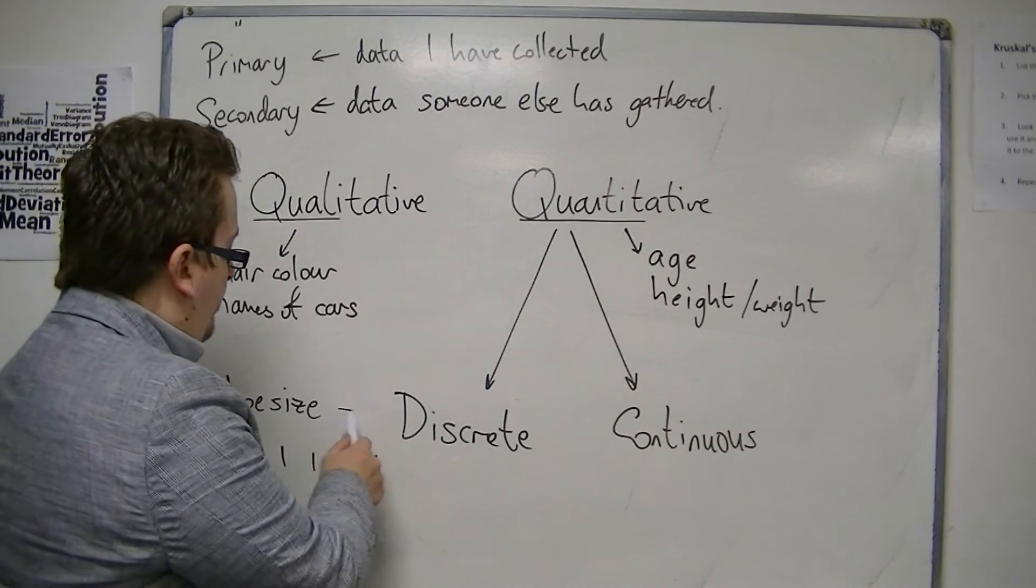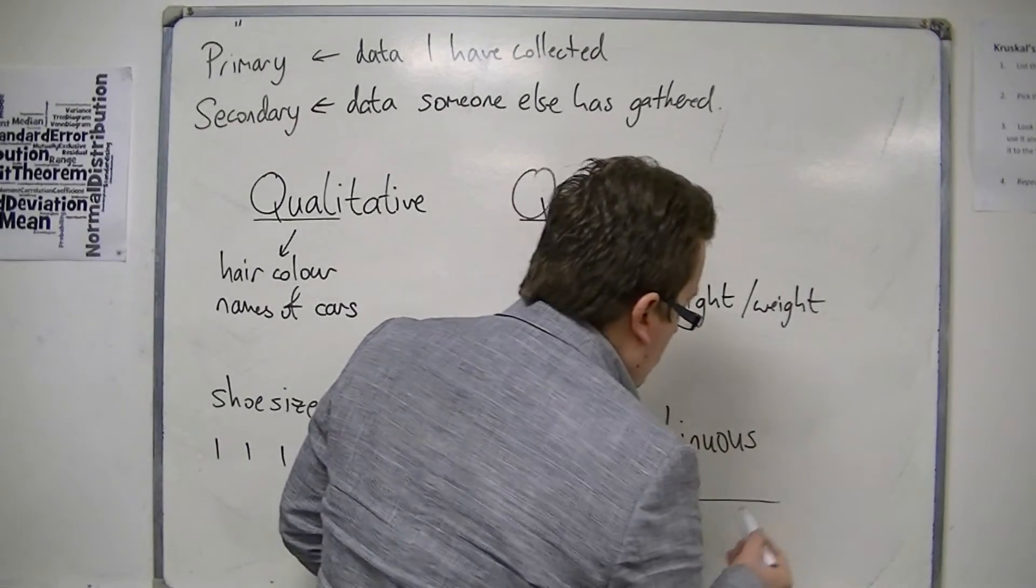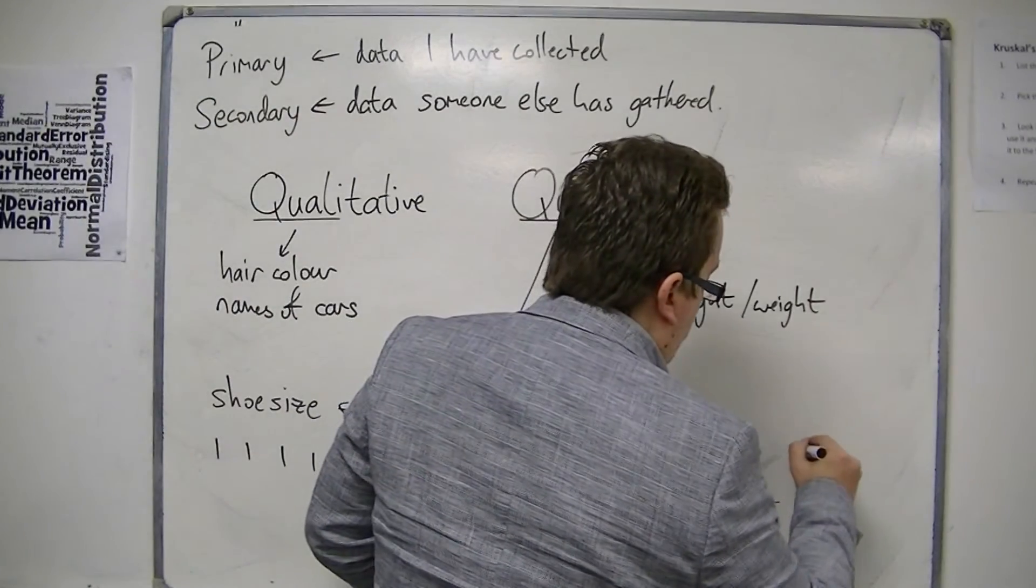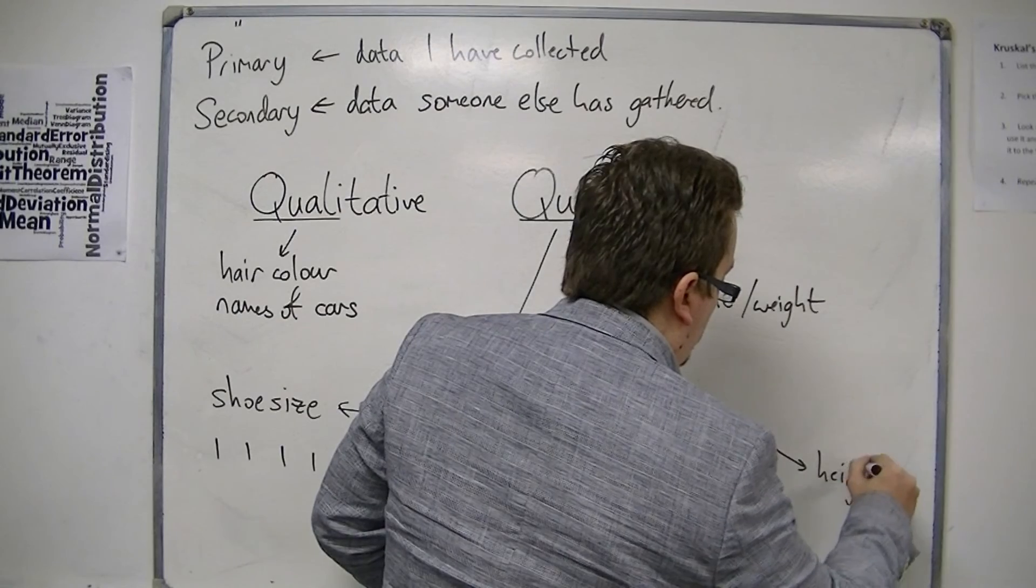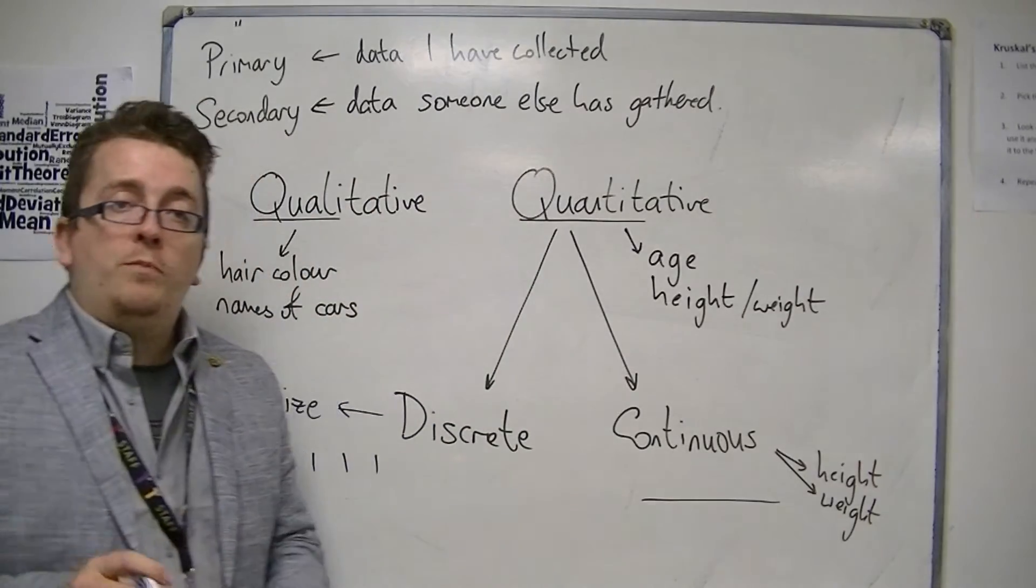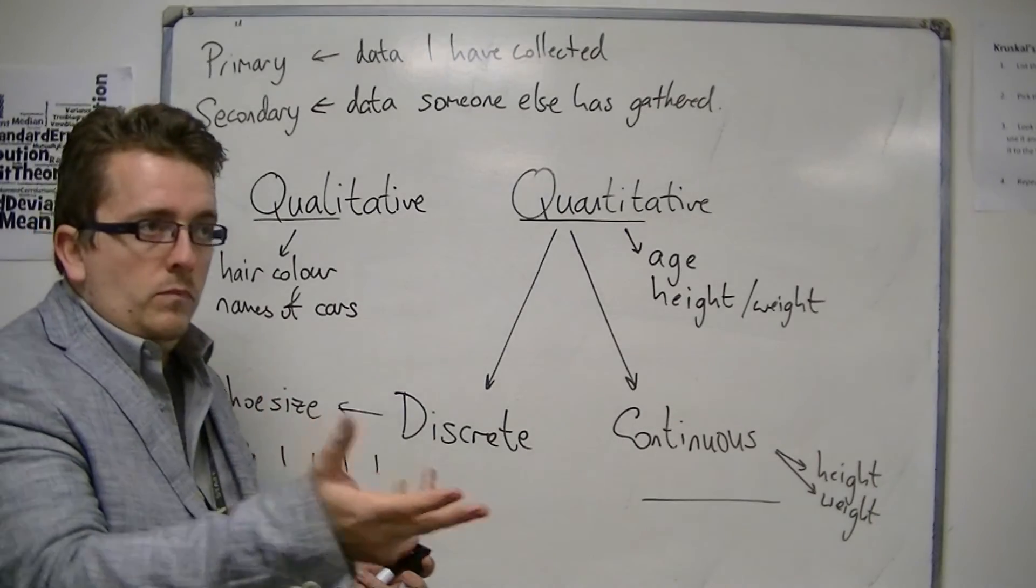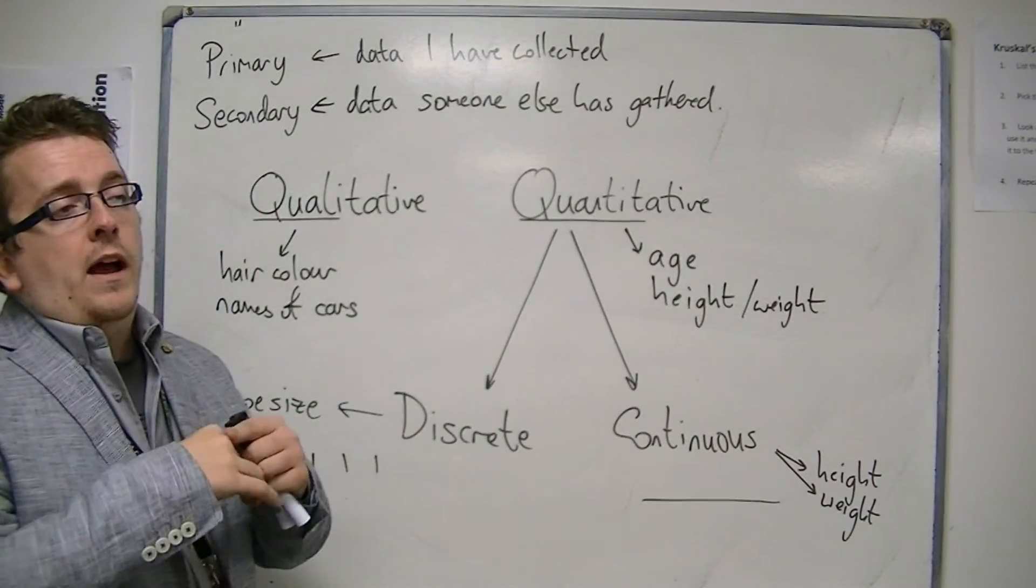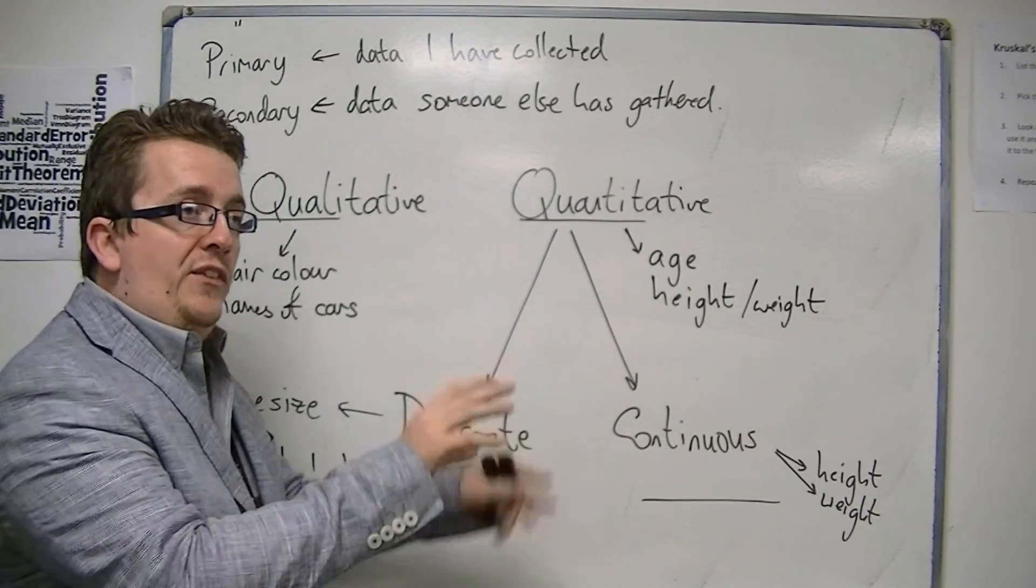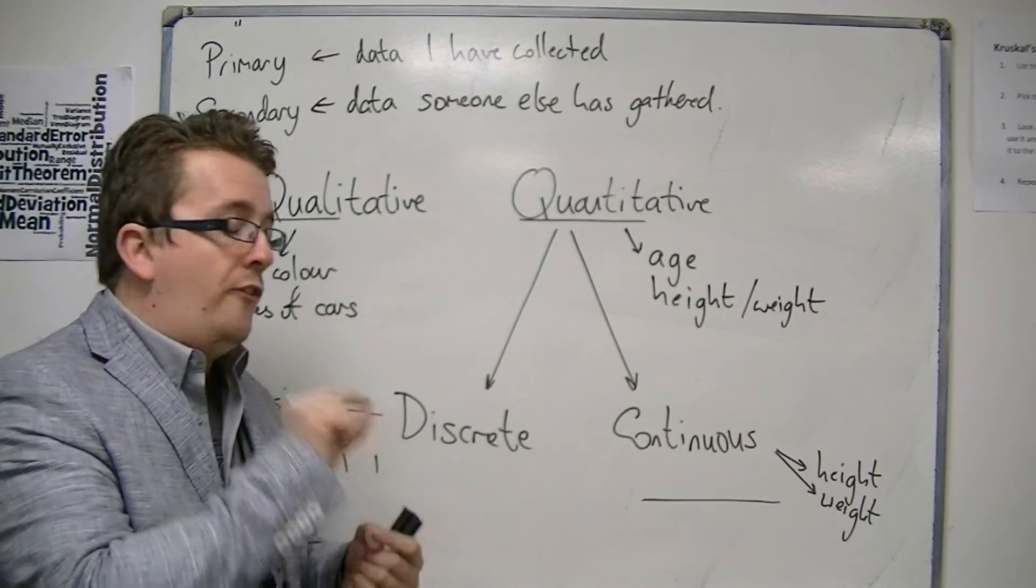For continuous, continuous means that it can take on any value within a certain range. So things like height and weight are very good examples of continuous data. Because if I measure a group of people's height, then they might be 102 centimeters, they might be 103 centimeters, might be 102.5 centimeters, 102.56789 centimeters. And I can measure them with ever increasing degrees of accuracy.